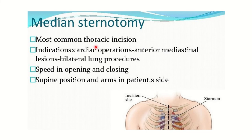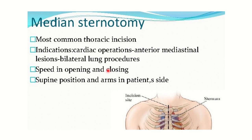Median sternotomy is the most common thoracic incision, providing a better field and view. It is done during cardiac operations, anterior mediastinal lesions, or bilateral lung procedures. Its advantages include speed of opening and closing, and the patient is placed in the supine position with arms at the sides.